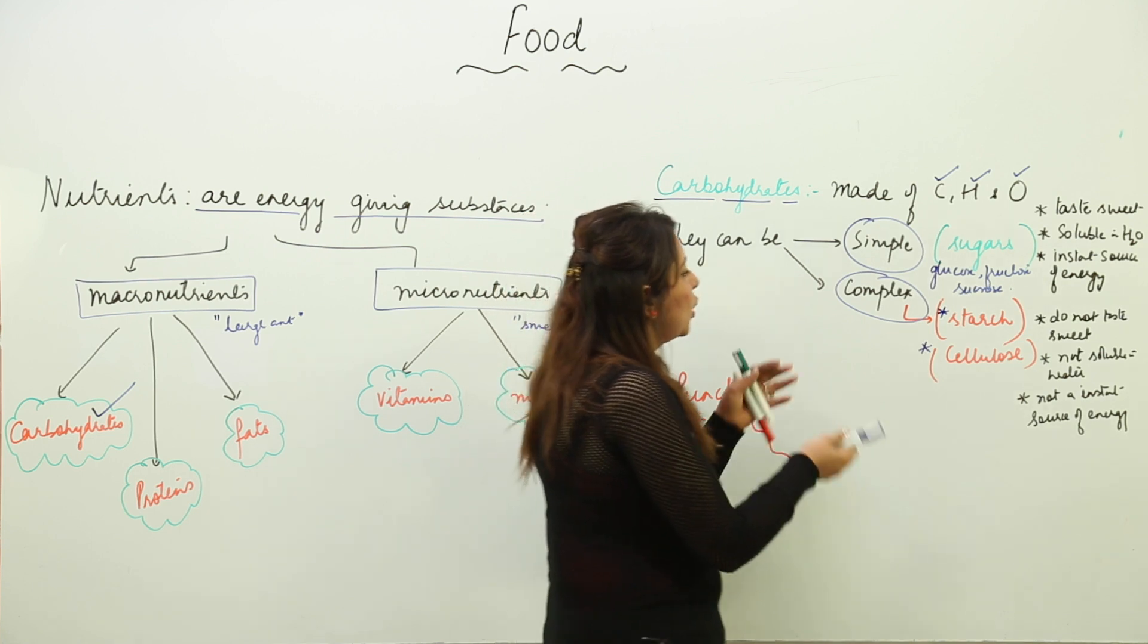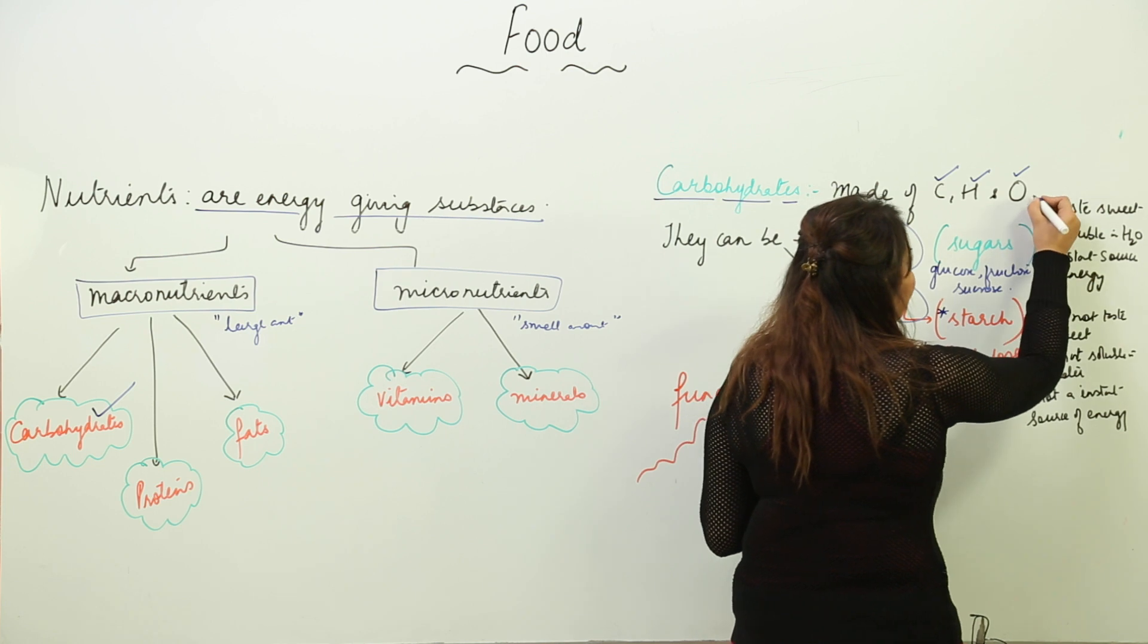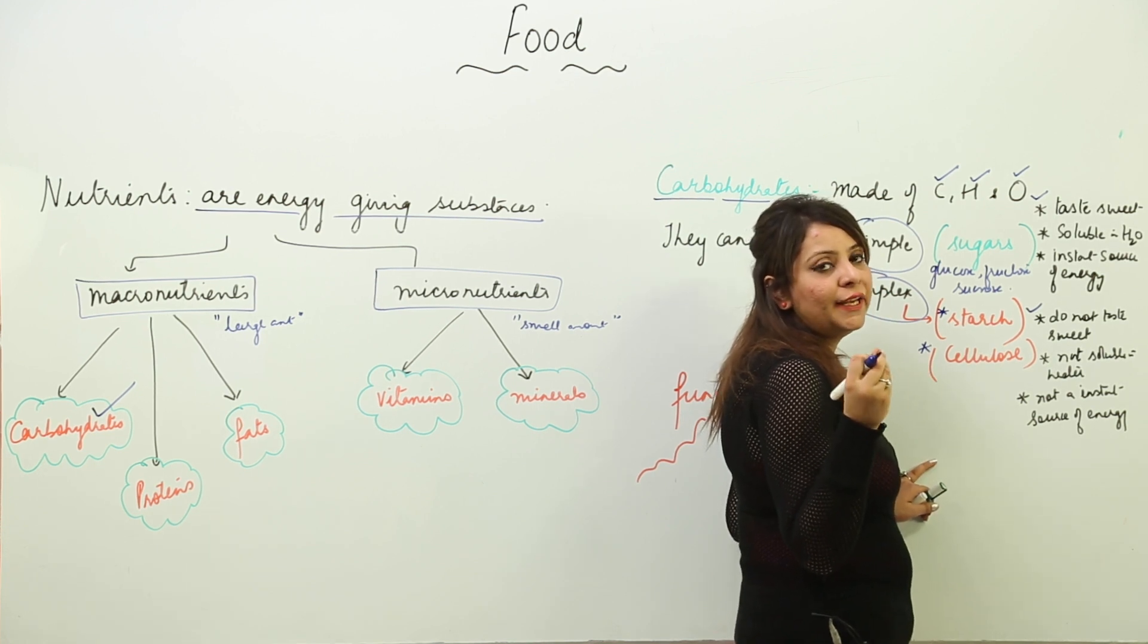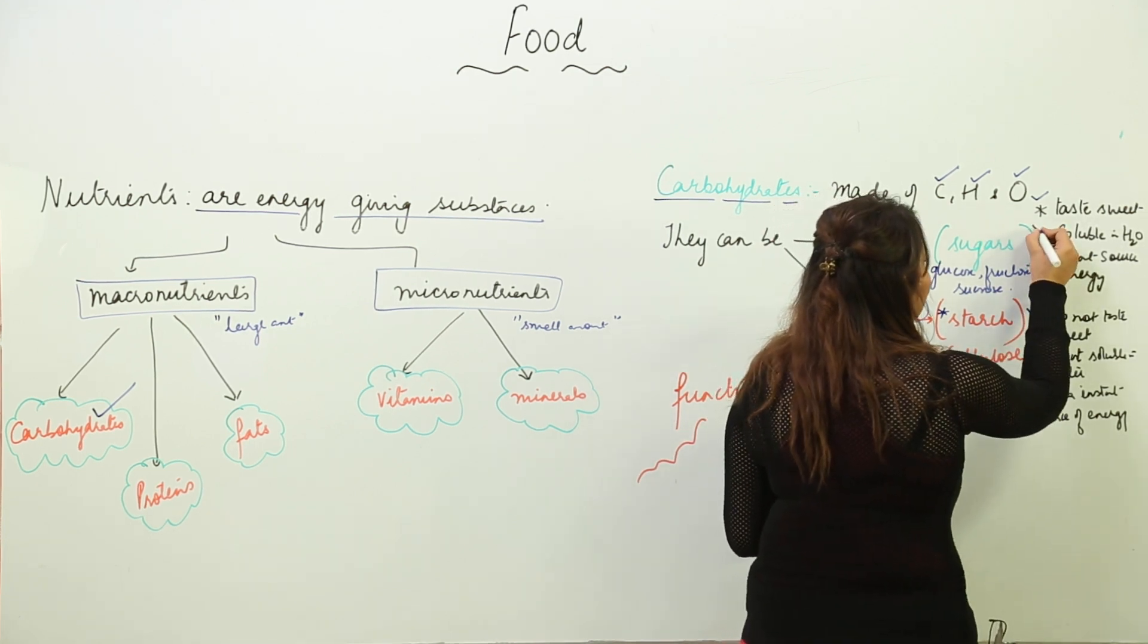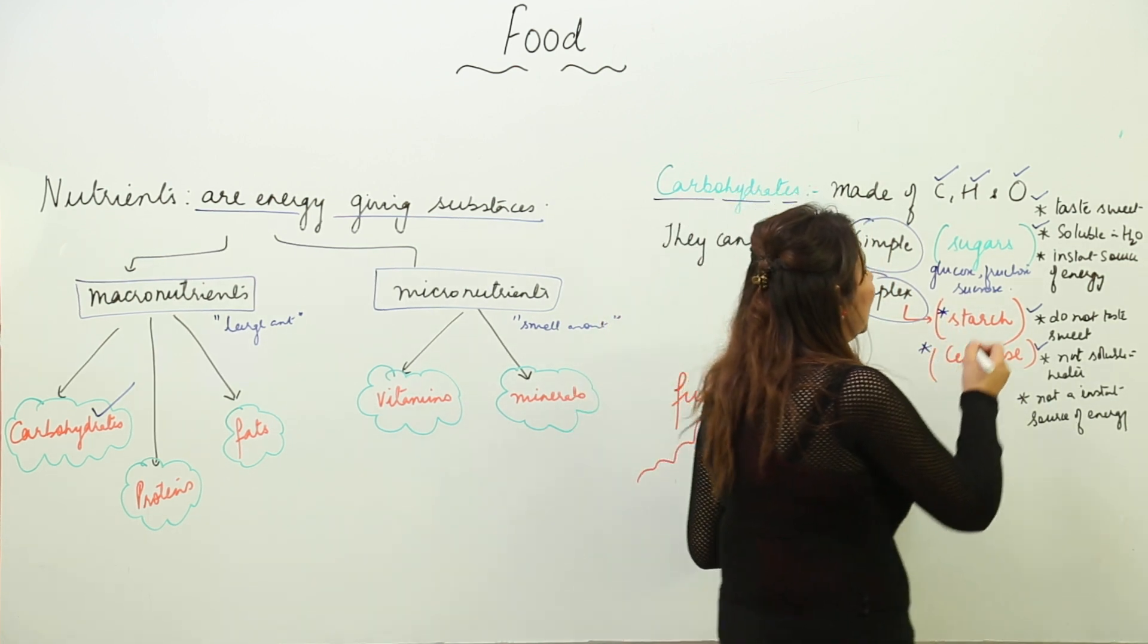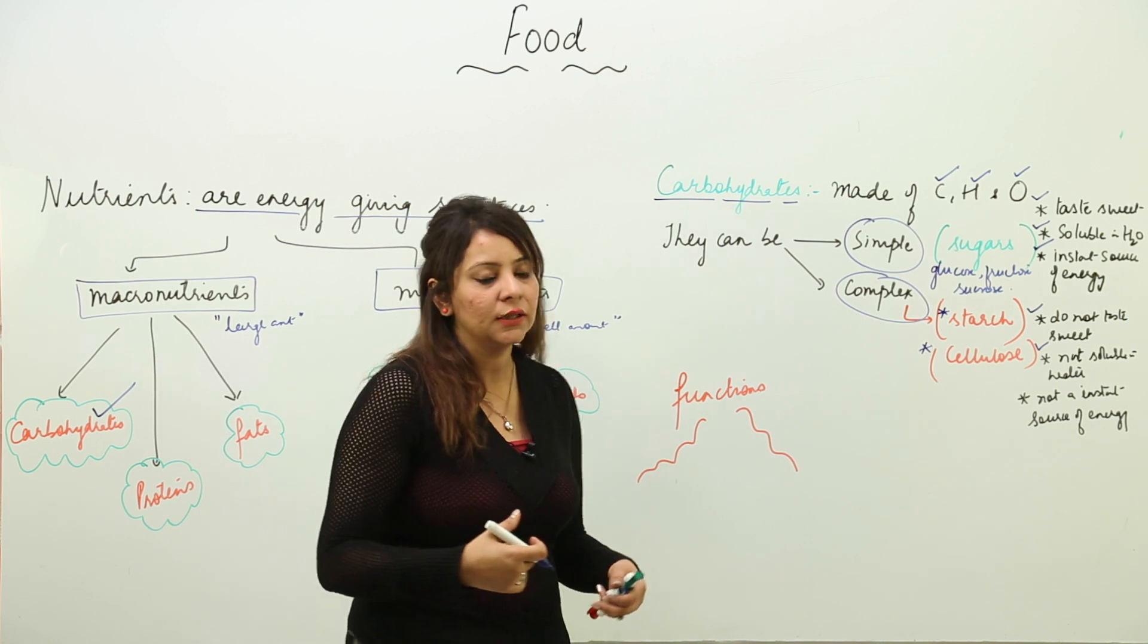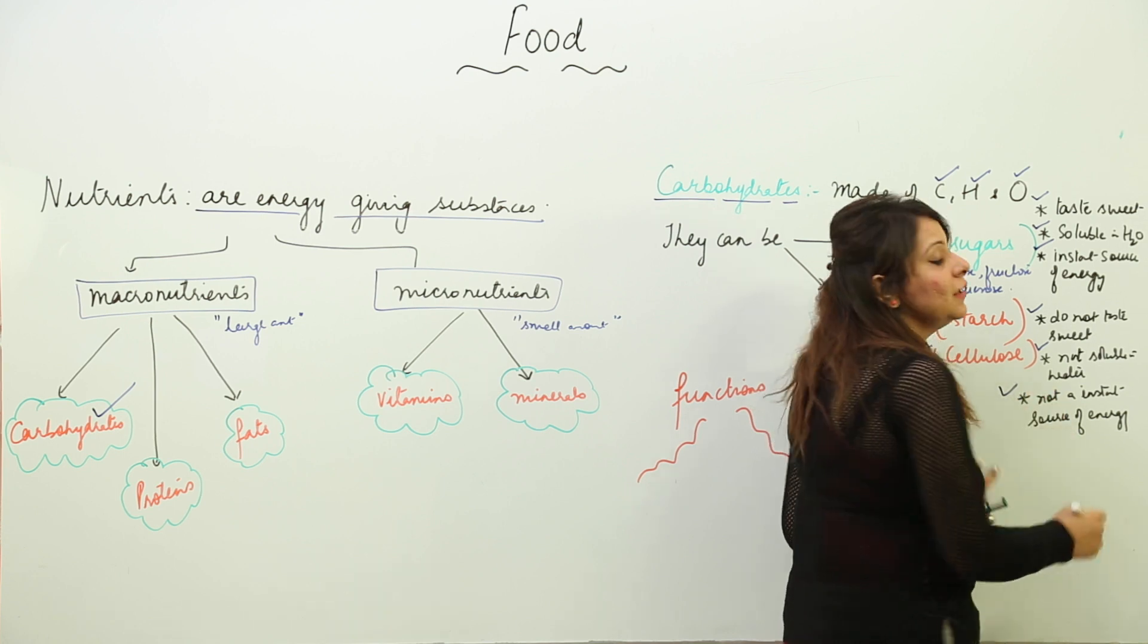The difference between the two: simple sugars actually taste sweet, but complex ones do not taste sweet. If you eat them raw, complex carbohydrates will not taste sweet, but simple sugars will taste sweet. Simple sugars are soluble in water, but complex ones are not soluble in water. Simple sugars are an instant source of energy. Whenever you need instant energy, you can eat a sugary product.